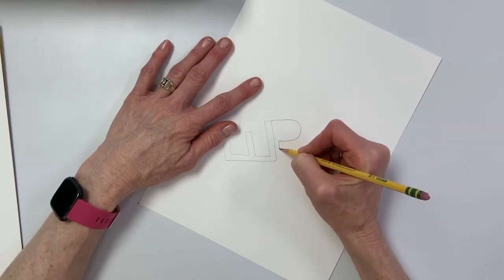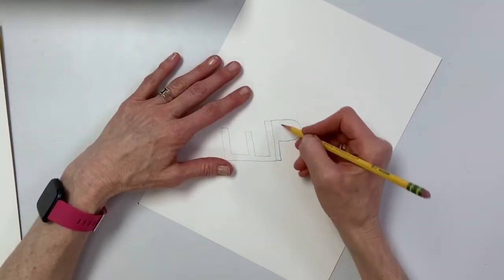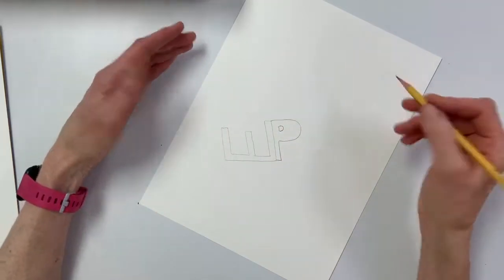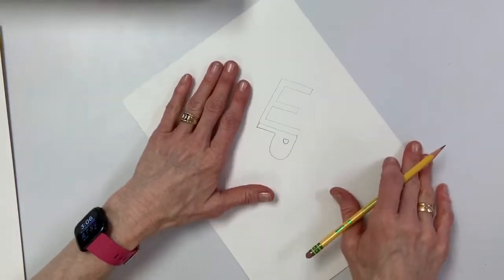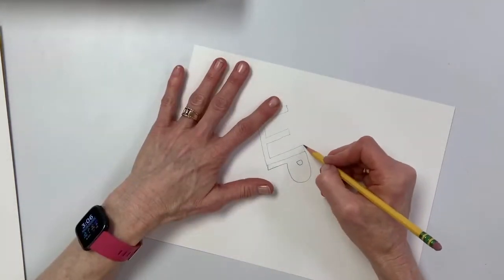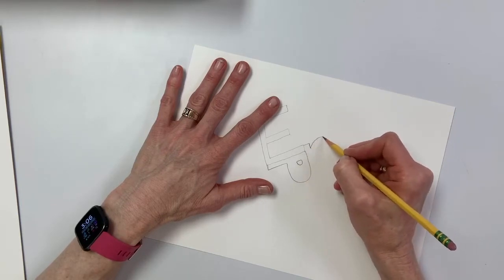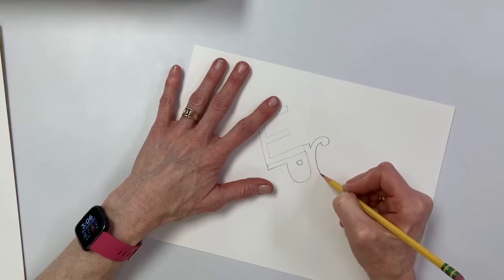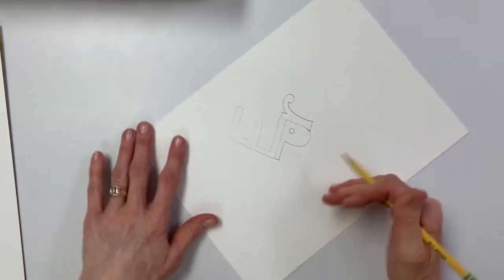You can draw - that was totally random by the way - you can draw lowercase and uppercase. I'm going to make this P kind of funky, give it a little circle there. Now I'm going to draw a lowercase r.